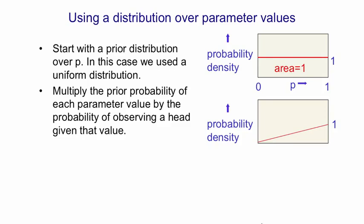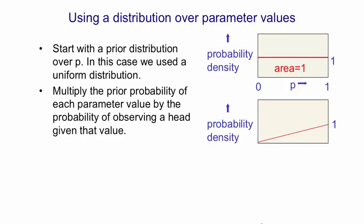That's our unnormalized posterior. It's unnormalized because the area under that line doesn't add up to one. And of course for a probability distribution, the probabilities of all the alternative events have to add to one. So the last thing we do is we renormalize it. We scale everything up so the area under the curve is one. And now if we started with a uniform prior distribution over p, we end up with this triangular posterior distribution over p, having observed one head.